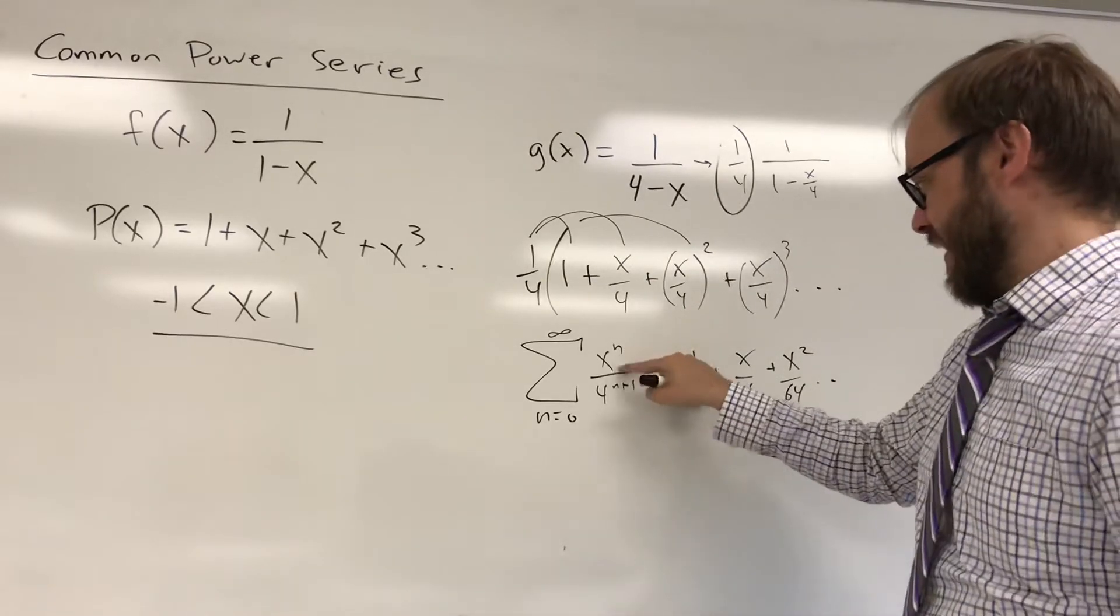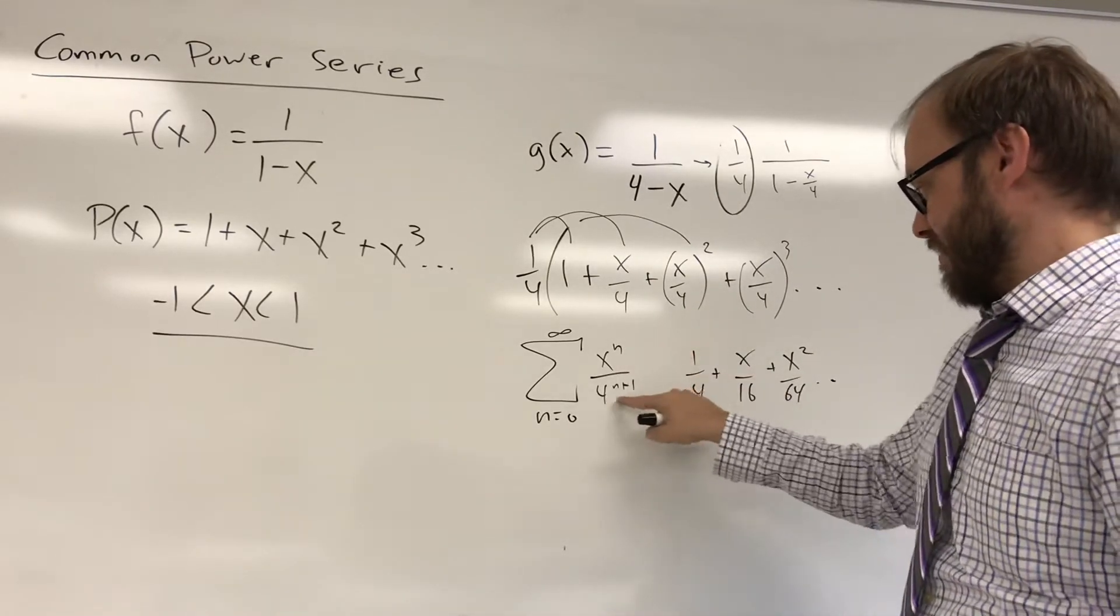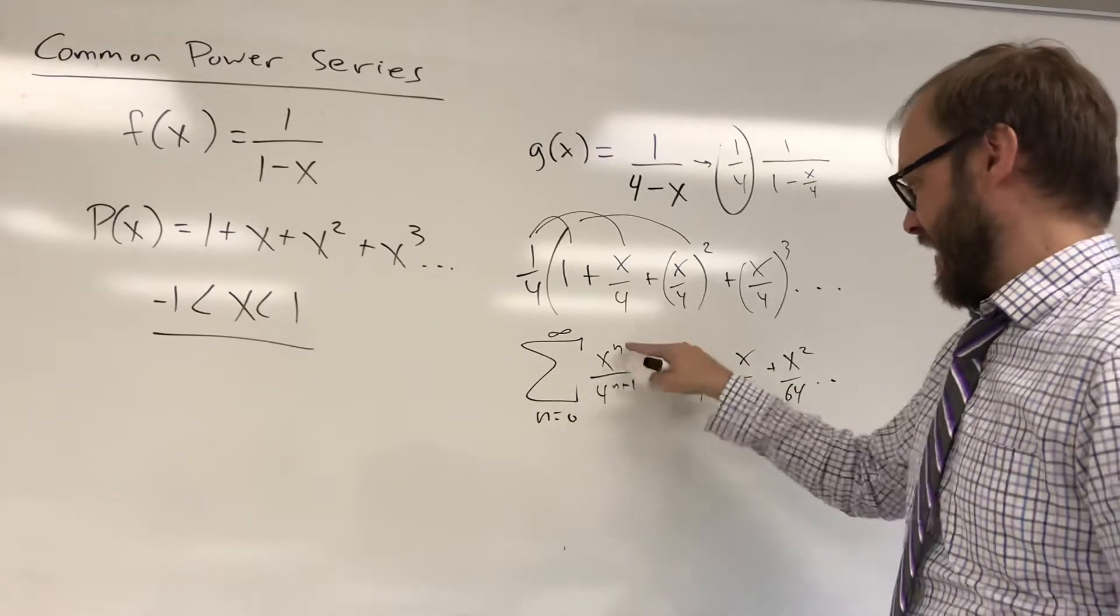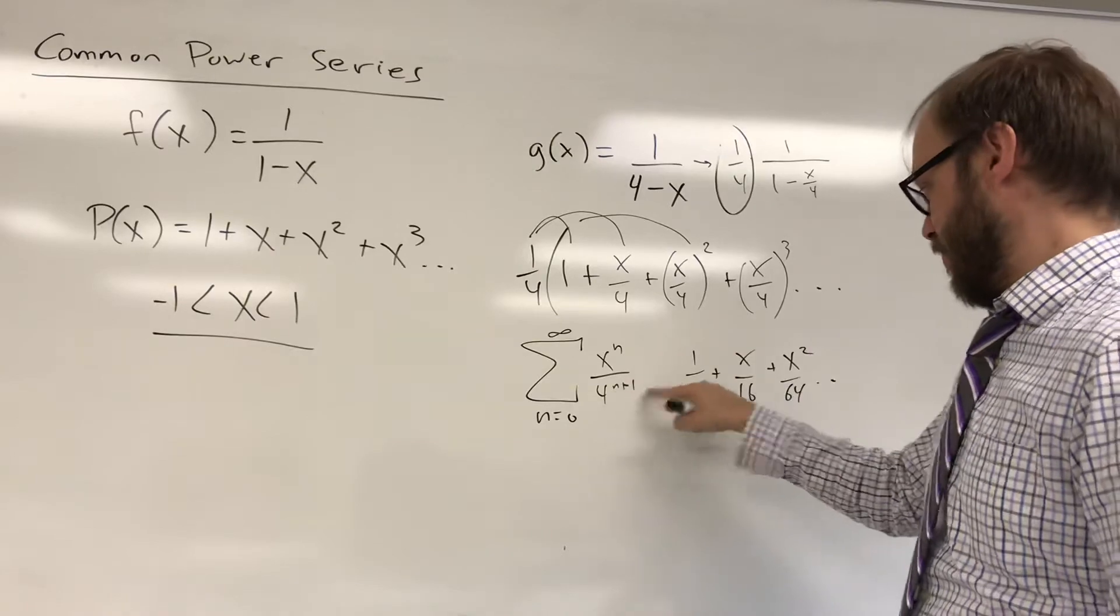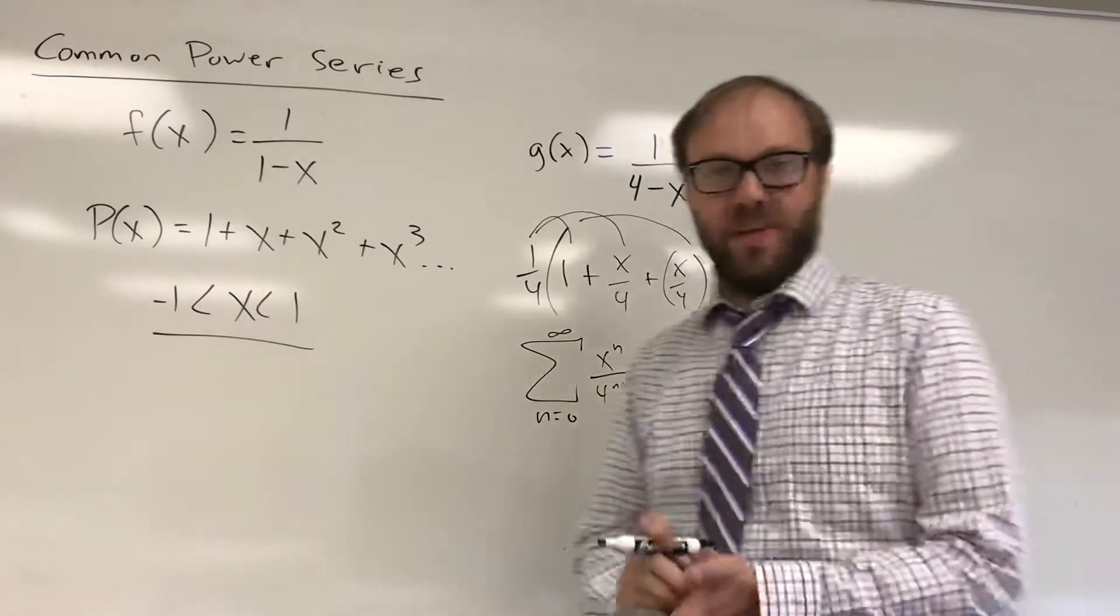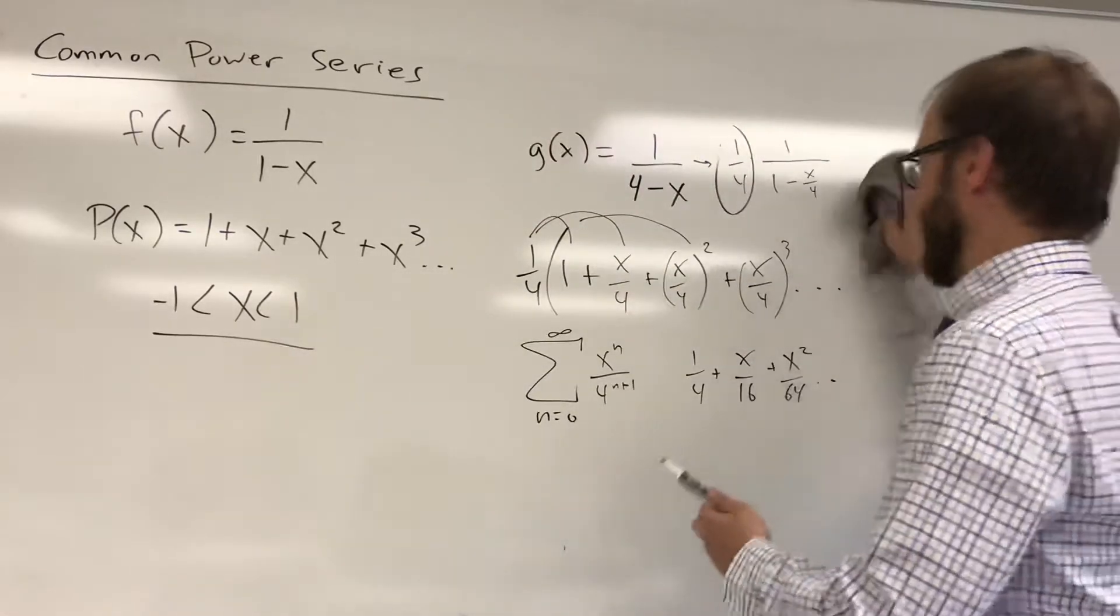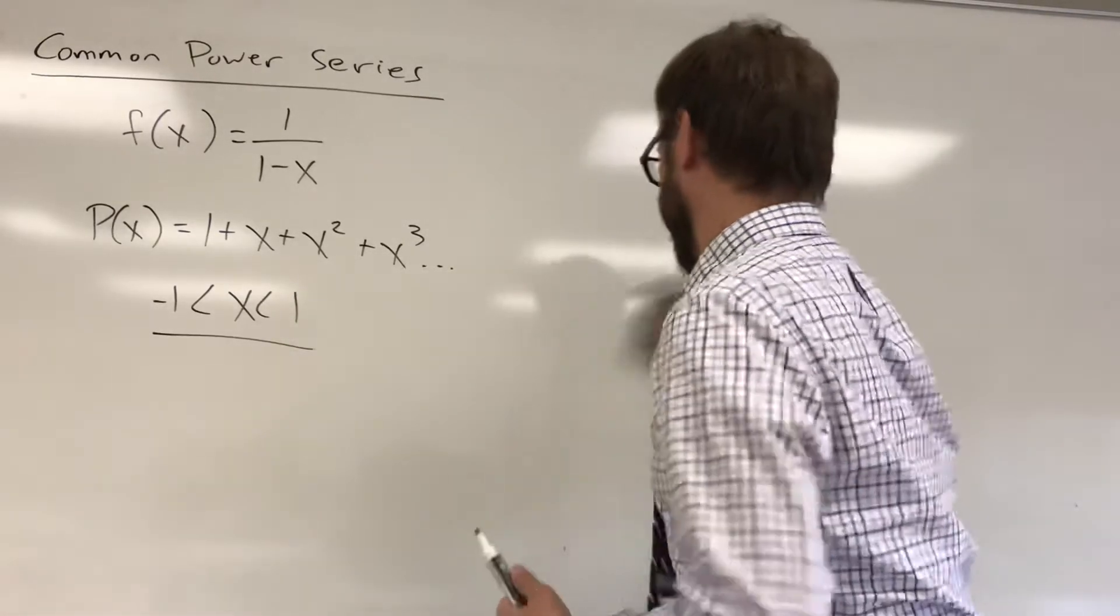And notice here, if n was 0, we get x to the 0, we'd get 4. If x was 1, sorry, if n was 1, we'd get x to the 1st over 4 squared, which is 16. And I think you're going to see that the series does work out. So you can get some things that look relatively strange.